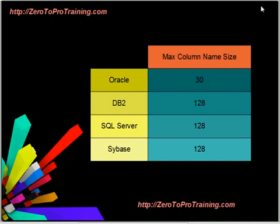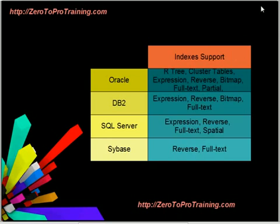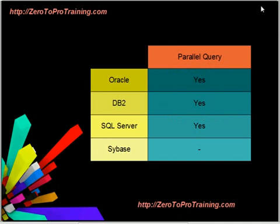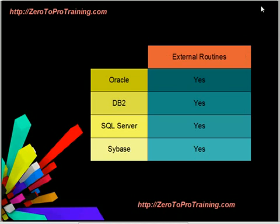This slide shows if materialized views are supported. This slide shows what kind of indexes are supported. This slide shows if parallel queries are supported. This slide shows if triggers, functions, and procedures are supported. Here is a comparison of external routine support. Here is a comparison of partitioning support.